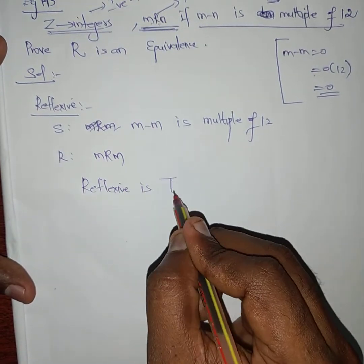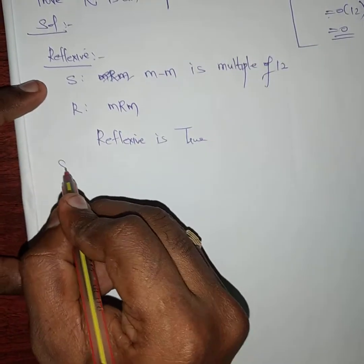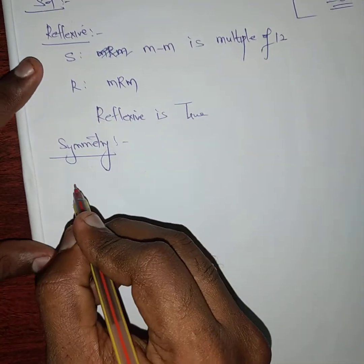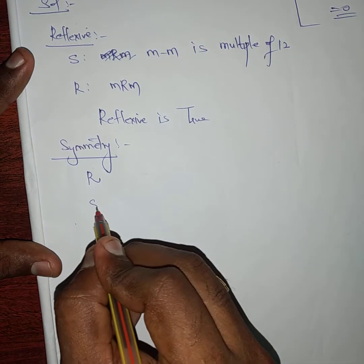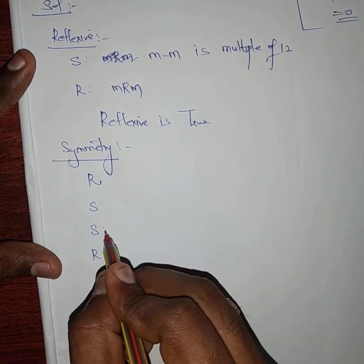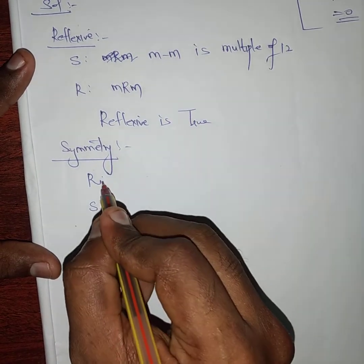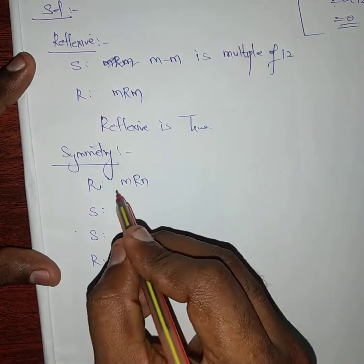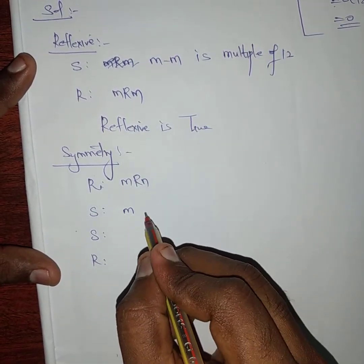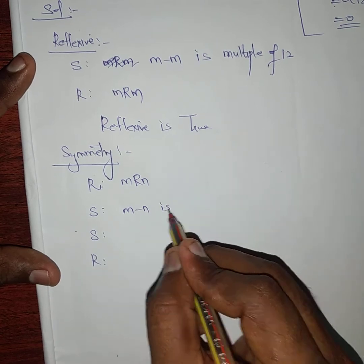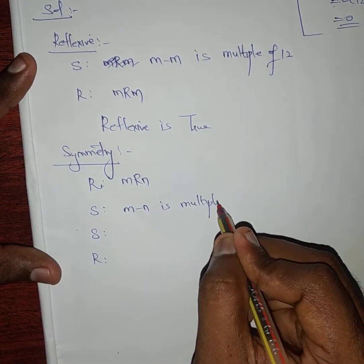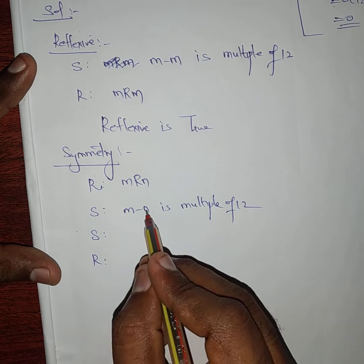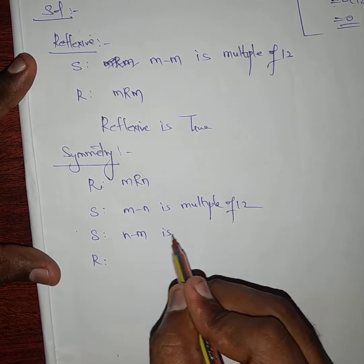Next is symmetry. For symmetry, we write the relation: m relates n. The statement means m minus n is a multiple of 12. Now we need to show n minus m is also a multiple of 12.